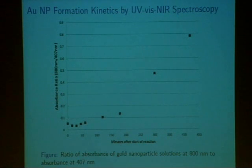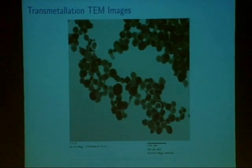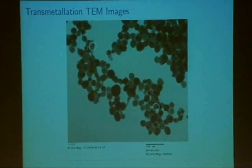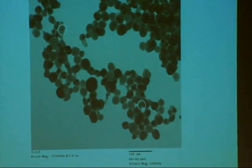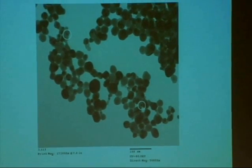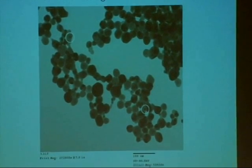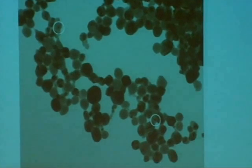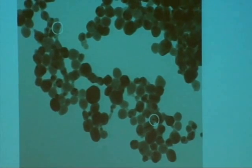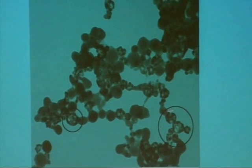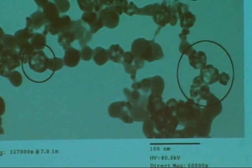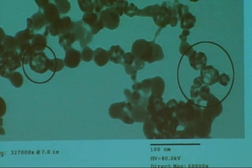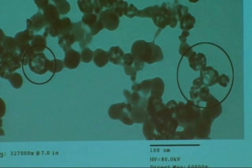We also took images with the transmission electron microscope at various times during the reaction. In the one-hour image, some of the silver nanoparticles are starting to show dots — these are sites of gold deposition on the nanoparticles. These dots grow and become more prevalent as the reaction progresses. Eventually, at seven hours, you can see the formation of these hollow gold nanostructures. These are exactly what we want — hollow, porous gold structures.